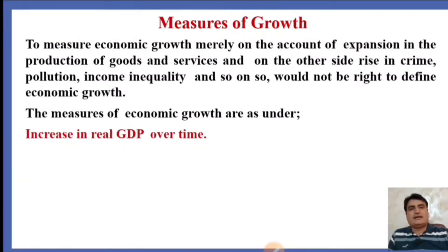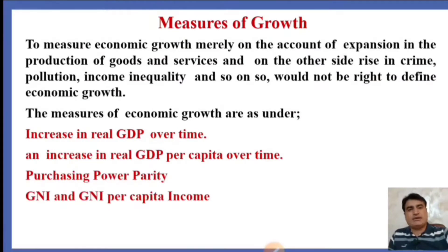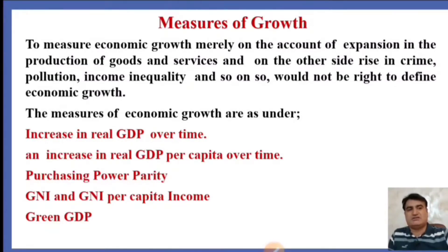Number one is the increase in real GDP over time. The second measure is an increase in real GDP per capita over time. Third is purchasing power parity. Fourth is gross national income and gross national income per capita. Fifth is green GDP. These are the different measures, and we shall discuss each one in detail, looking at the drawbacks and benefits.